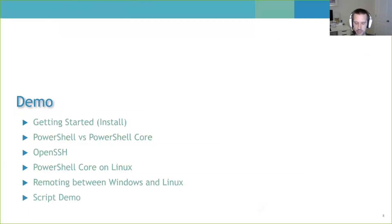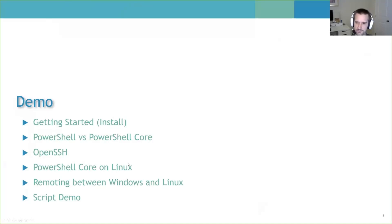Today I'll walk through a few things: starting with an install, then going over differences between PowerShell and PowerShell Core—variables and such. I'll cover OpenSSH and remoting into PowerShell Core and PowerShell 7 boxes, show what it looks like on Linux, remote between Windows and Linux boxes, and also demonstrate on a macOS box. Finally, I'll run a script demo showing commandlet differences across operating systems.